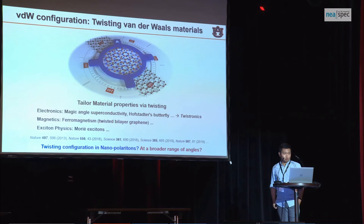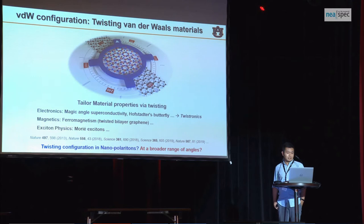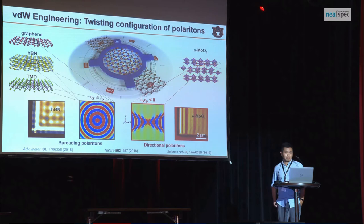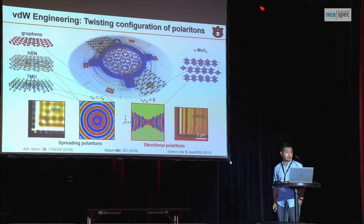In addition to stacking, twisting is another tuning parameter in 2D materials, with many exciting discoveries in twisting physics including moiré superconductivity, ferromagnetism, and other important phenomena. A natural question is whether we could achieve similar effects in polaritonics. If you choose boron nitride or other isotropic materials, it is actually very difficult, because once polaritons are launched they expand in all directions, so twisting them makes little difference unless you form a superlattice.